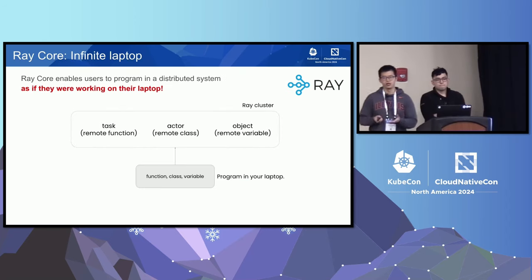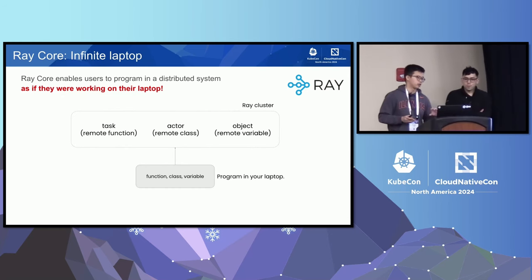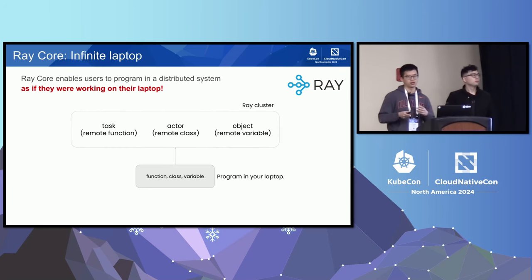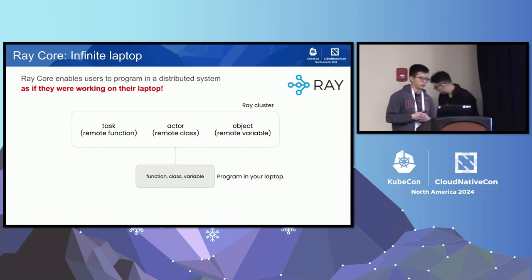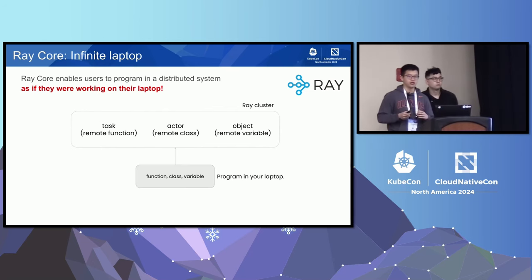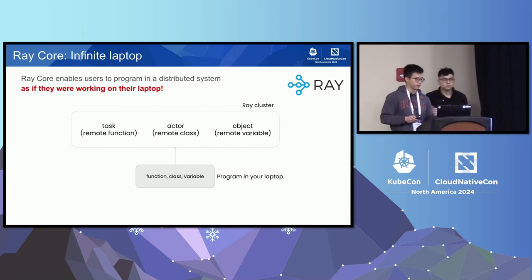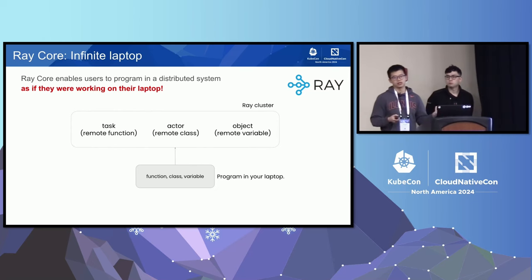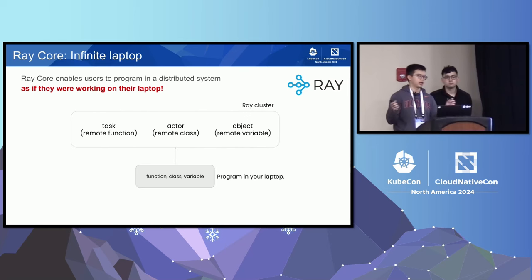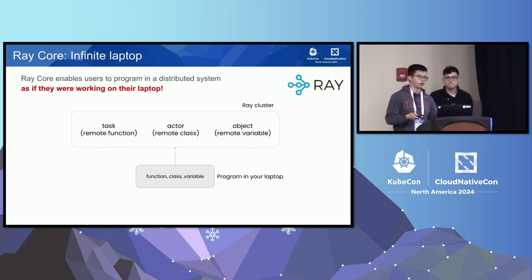What is Ray? When we introduce Ray, we should start from the fundamental: Ray core. When we program on a laptop, a program consists of three elements: functions, classes, and variables. Ray core provides a distributed API that maps one-to-one with these three elements. Ray task is the remote function, Ray actor is a remote class, and Ray object is the remote variable.